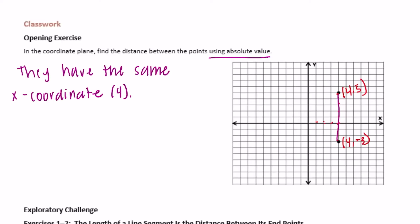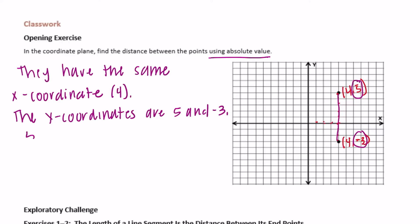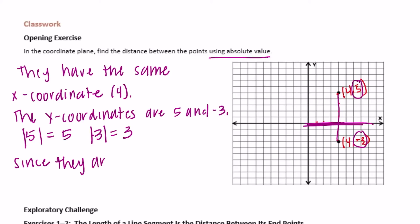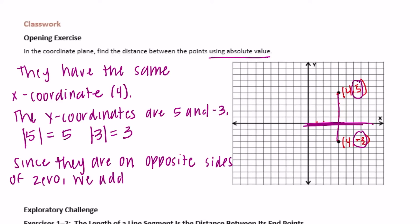We don't need to do anything with those. So we're going to use 5 and negative 3. The y-coordinates are 5 and negative 3. We're going to find the absolute value of each. The absolute value of 5 is 5, and the absolute value of negative 3 is 3. Since they're on opposite sides of 0 — 0 being the x-axis — we add them. If they were on the same side, we would subtract. So 5 plus 3 equals 8.